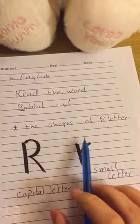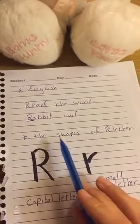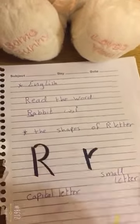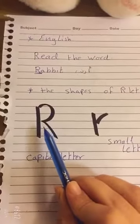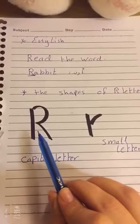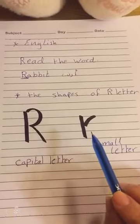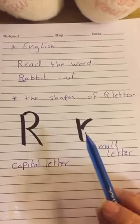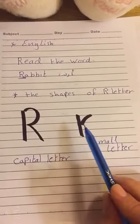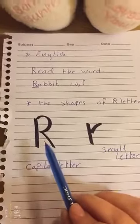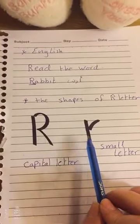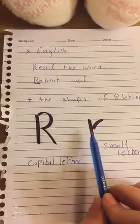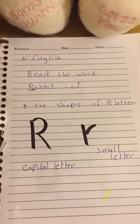The shapes of R letter: R letter has two shapes. The first shape is R capital letter — Ar capital letter. The small shape is R small letter — Ar small letter. Ar capital letter. Ar small letter.